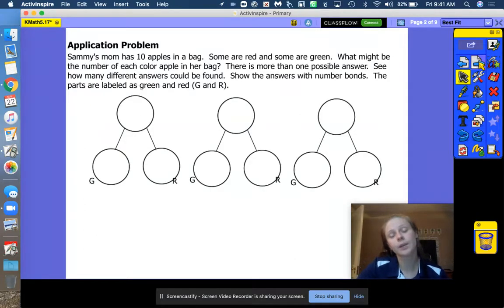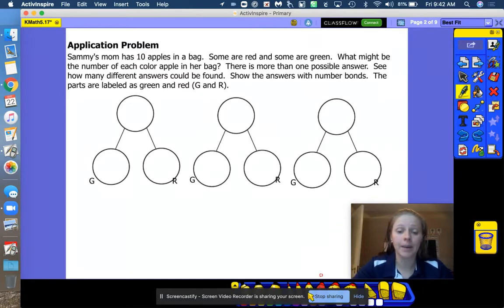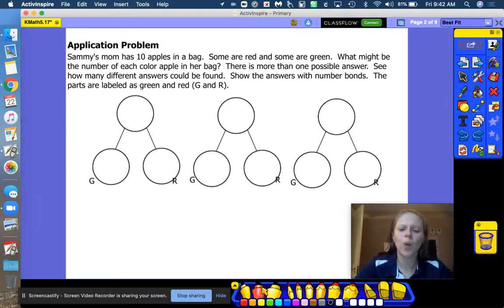Alright friends, before we get started, we're going to practice our number pairs to 10. Sammy's mom has 10 apples. How many? 10 apples. Some are red and some are green. What might be the number of each color apple in her bag? Now we don't know, and there's lots of different possible answers. I'm going to get my marker ready with some red apples. How many red apples could she have? Let's see about three big juicy red apples.